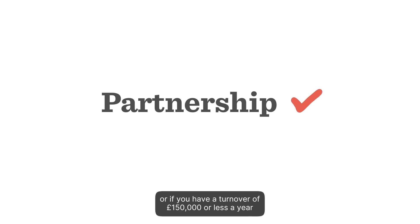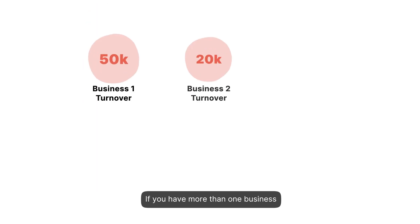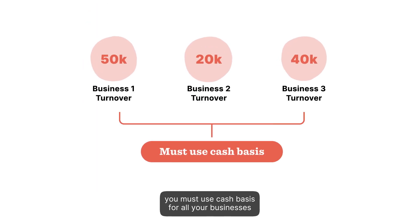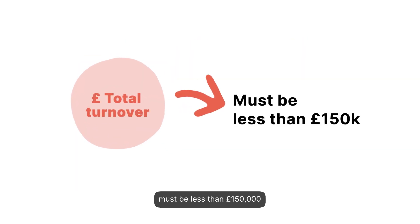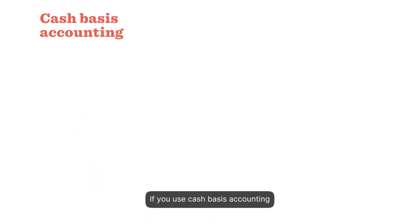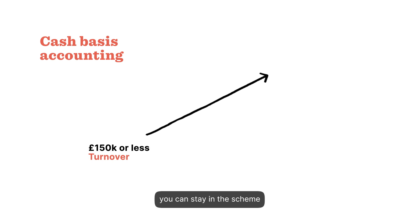You can use cash basis accounting if you have a turnover of £150,000 or less a year. If you have more than one business, you must use cash basis for all your businesses, and the combined turnover from your businesses must be less than £150,000.